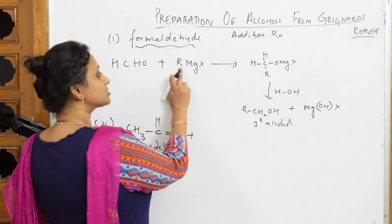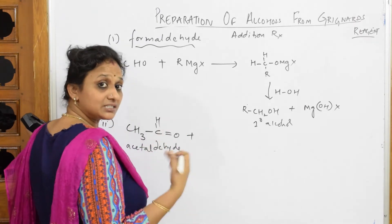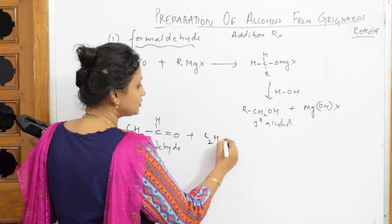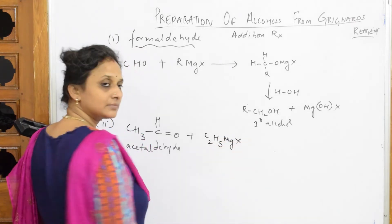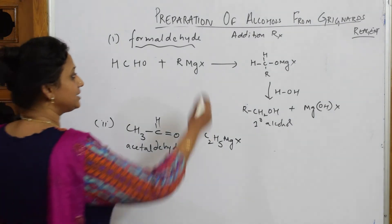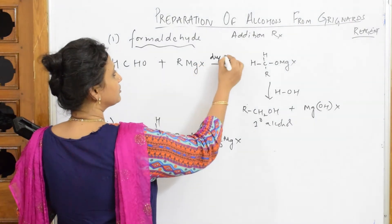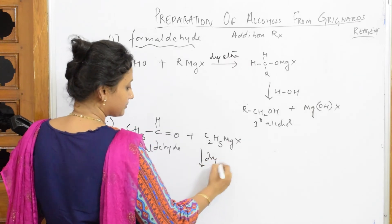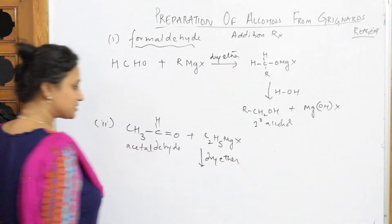And to this acetaldehyde, now instead of RMgX, let me write C2H5. R can be any alkyl group. So I let C2H5MgX. X can be chlorine, bromine, iodine. Now I forgot, I have to write this in presence of dry ether, inert solvent. Dry ether.